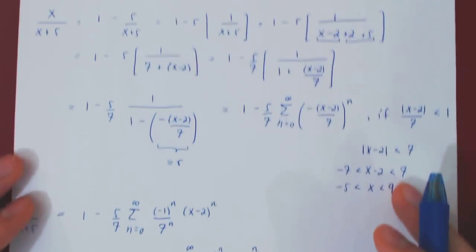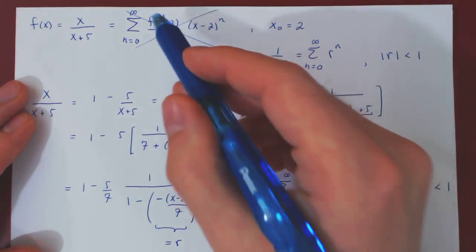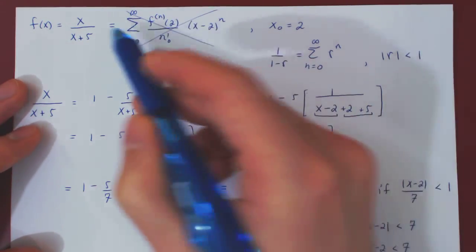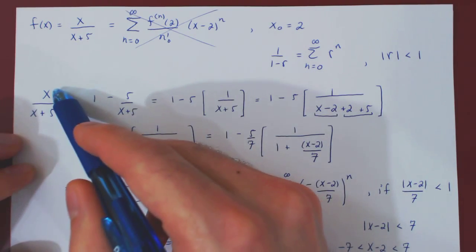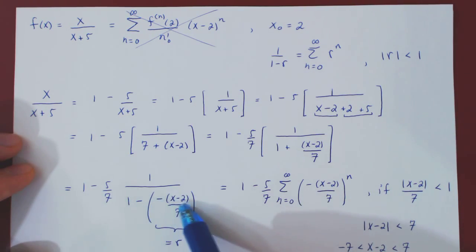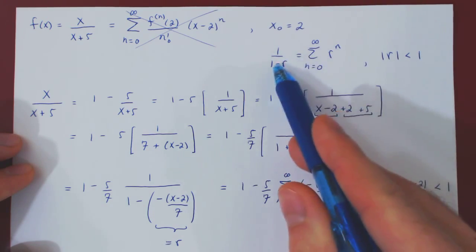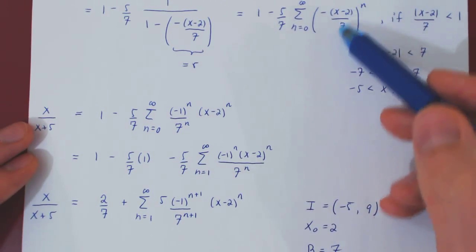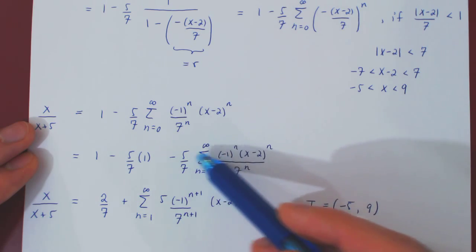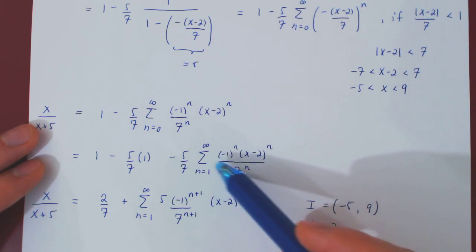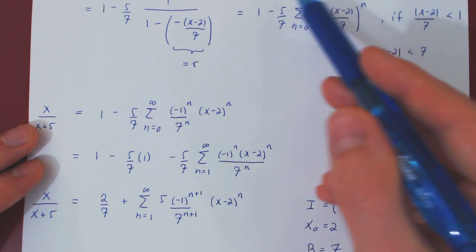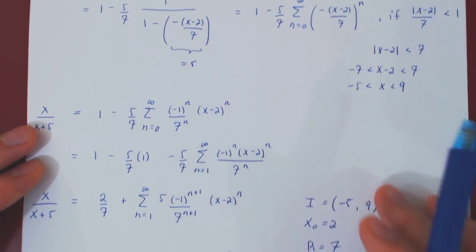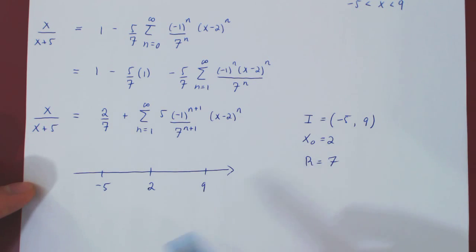We obtain the exact same conclusion that we did in the previous video, but with a radically different solution. Instead of finding a pattern for the higher derivatives of x over x plus 5 at 2, we, with a little bit of algebra, turned the rational function into something of the type 1 over 1 minus r, which we could then, using our knowledge of geometric series, turn into a Taylor series centered at 2. The remaining algebra simply transformed the Taylor series into the same exact form obtained in the previous video.